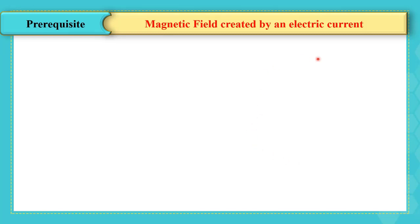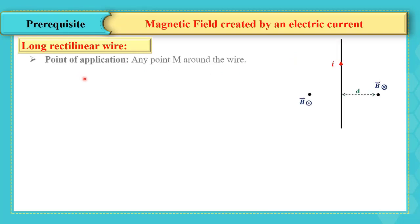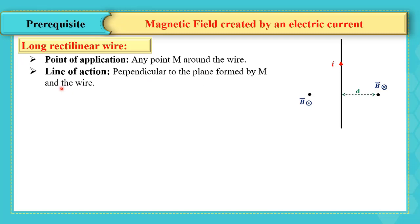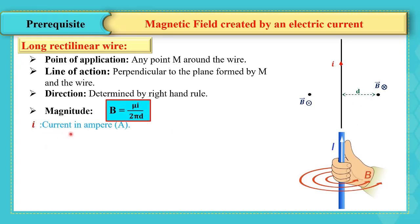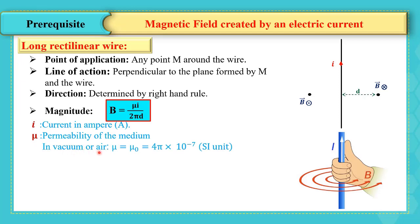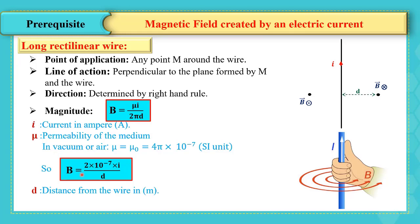In the case of a long linear wire, the magnetic field created at a point M around this wire has a line of action perpendicular to the plane formed by point M and the wire. Its direction is determined using the right-hand rule: the thumb takes the direction of the current. The magnitude of the magnetic field is B = μI / (2πD), where I is the current in amperes and μ is the permeability of the medium. In vacuum or air, μ = μ₀ = 4π × 10⁻⁷, so B = 2 × 10⁻⁷ × I / D, where D is the distance from the wire in meters.